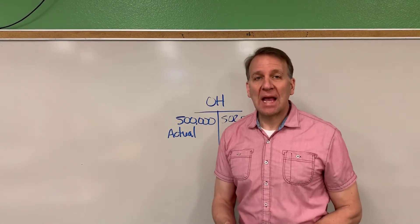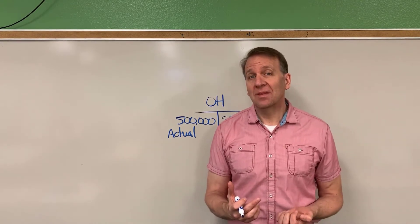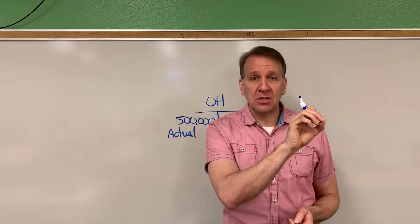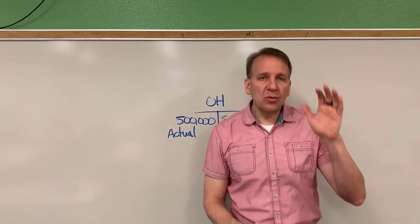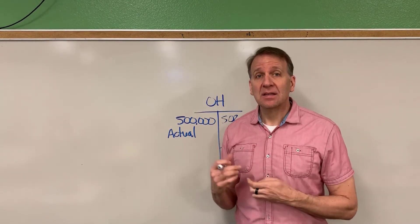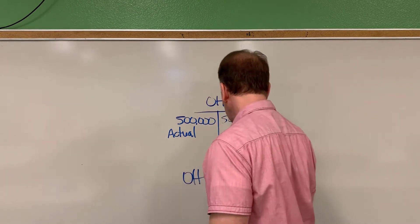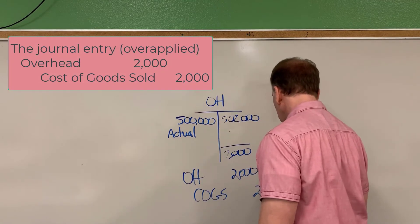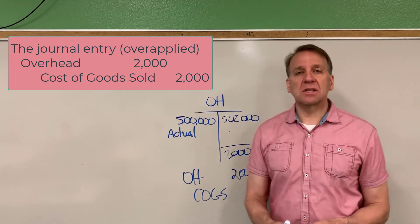There are different options to clear out or zero this account. The most popular one is just to close it out to cost of goods sold, because work in process goes to finished goods and eventually to cost of goods sold. Most of this over-allocated overhead has already been expensed through cost of goods sold, making it too high. So to close this out, we debit the overhead account $2,000 and credit cost of goods sold $2,000. Now the overhead account is closed and we reduce cost of goods sold by $2,000.